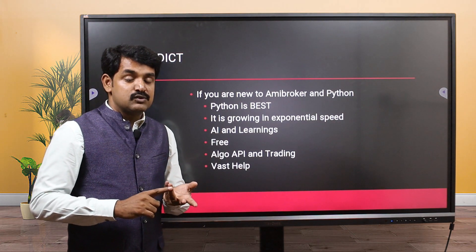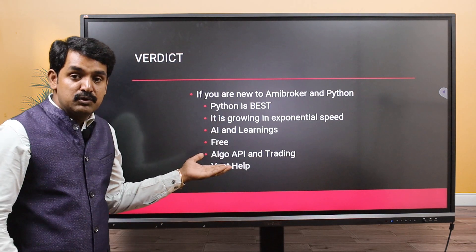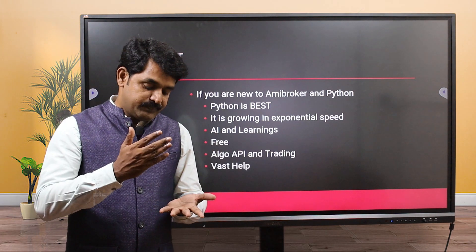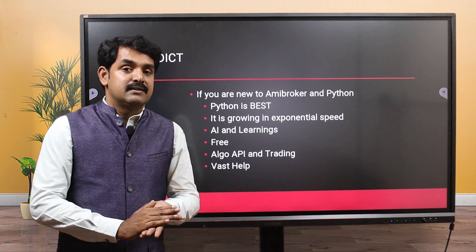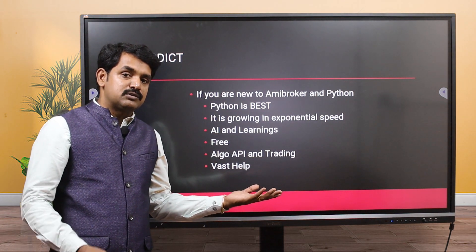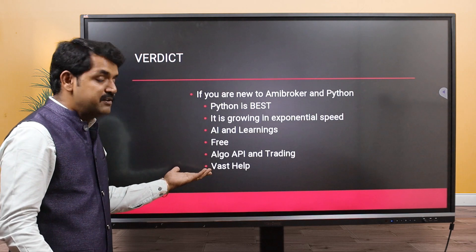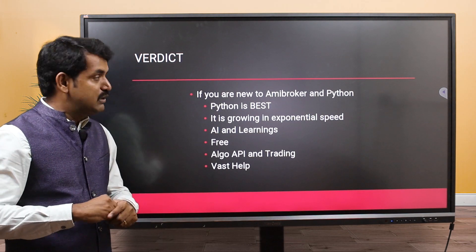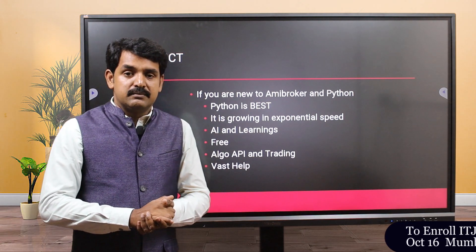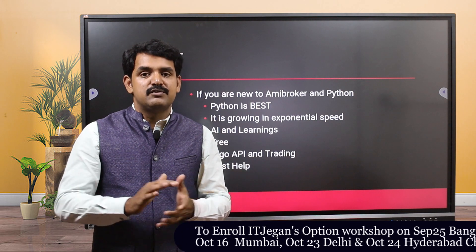Deep learning and machine learning are very important nowadays to update your algorithm, and Python is ideal for that. Python is free - you don't need to pay any cost - whereas AmiBoker has a license cost. Most brokers provide Python API; they don't provide AmiBoker or even C APIs. If you have issues with AmiBoker it is hard to find help, but for Python one Google search gives you a solution. My recommendation is Python, but try both and use whichever is comfortable for you.